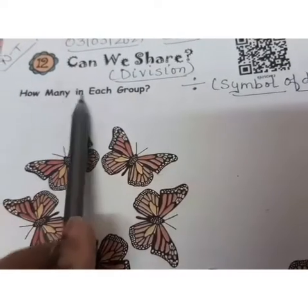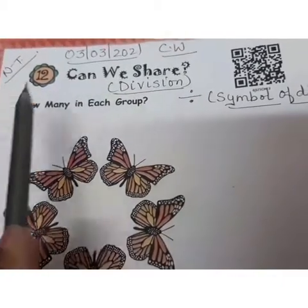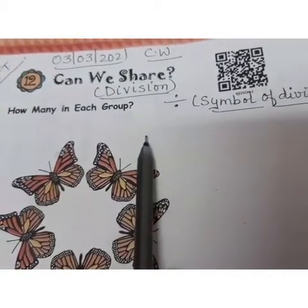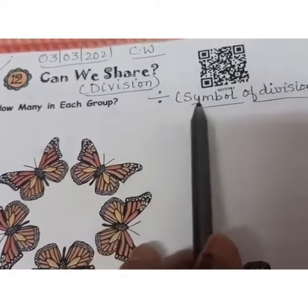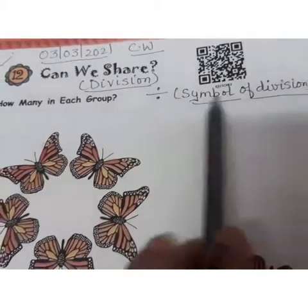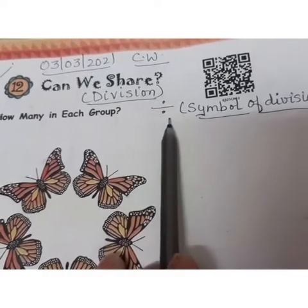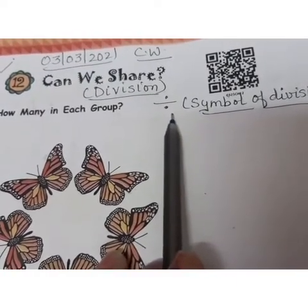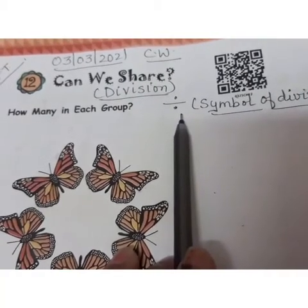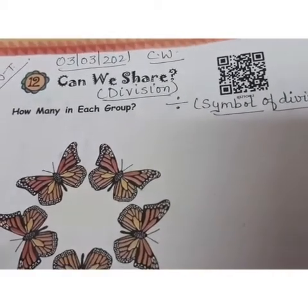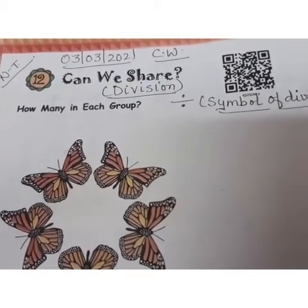Division हमेशा equally होता है। अगर हम 5 जनों के बीच में chocolates divide करते हैं, तो हर 5 को equal number of chocolates मिले — that is called equal division. The symbol of division is a line with a dot above and below. If this symbol is placed between two numbers, that means you have to divide those two numbers. Division is all about sharing things equally.